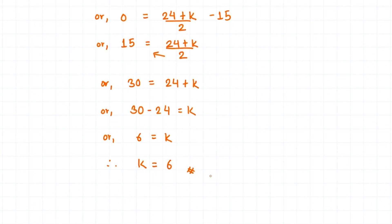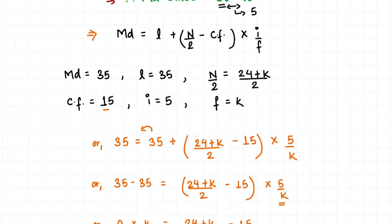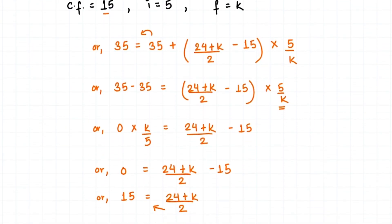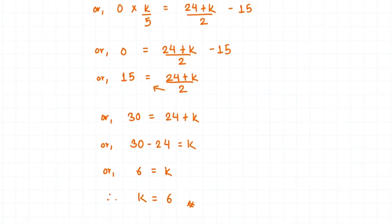We have found our missing frequency — k equals 6. To recap: we first found the cumulative frequency, identified the median class as 35 to 40 directly from the given median, then substituted all values into the median formula and solved to get k = 6. If you enjoyed this video, please give us a thumbs up and subscribe to our channel for future maths videos. Thank you.